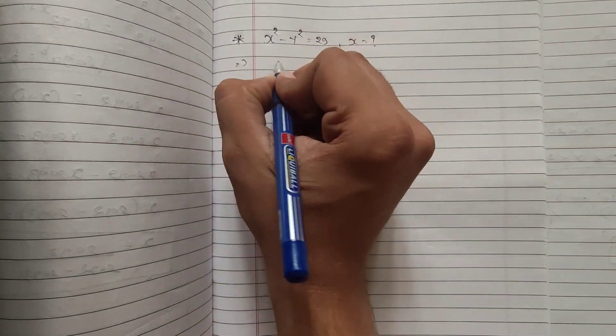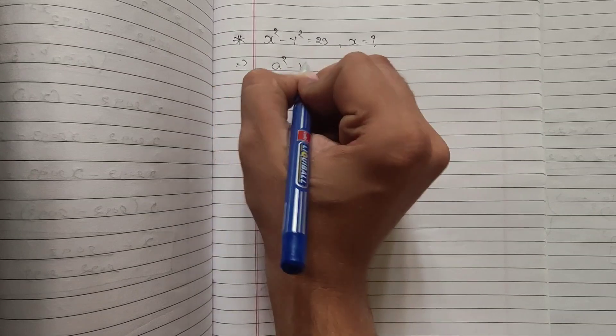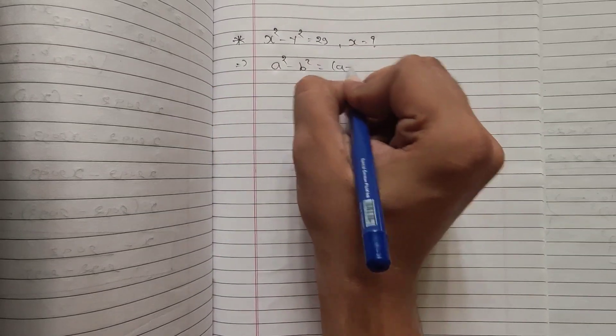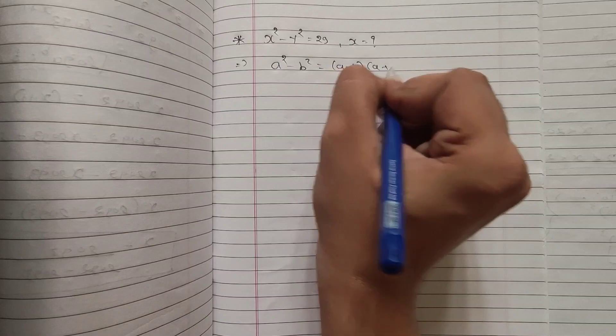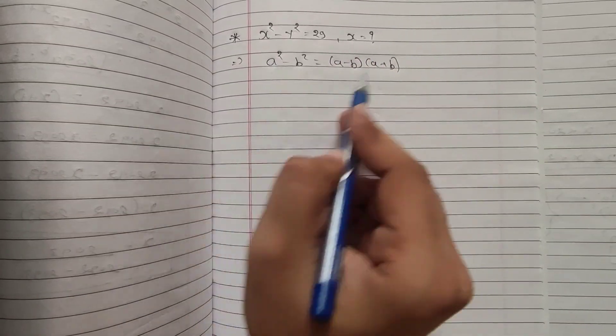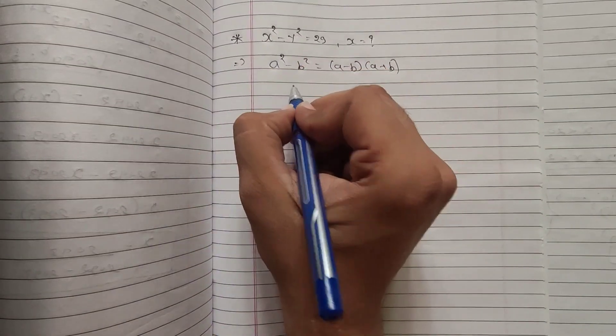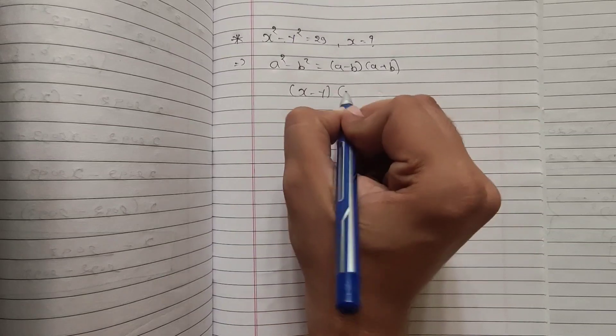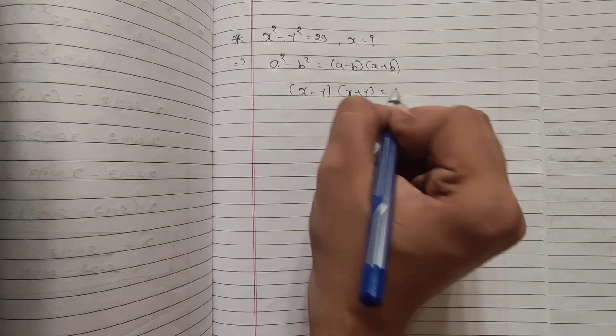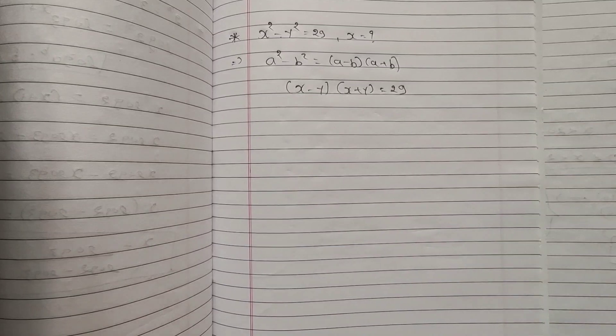I am sure all of you know this formula that whenever we have a square minus b square, I can write it as a minus b into a plus b. So according to this formula, I can write x square minus y square as x minus y and x plus y which is equal to 29.